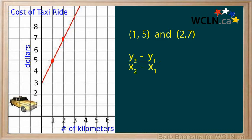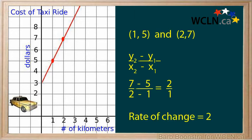The rate of change will be the difference in y over the difference in x. Seven minus five over two minus one. The rate of change will be two.